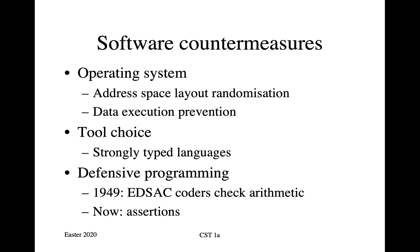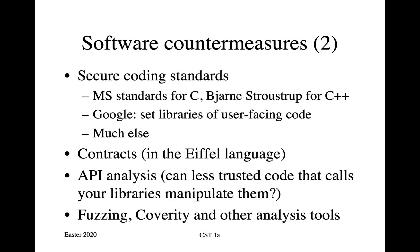Another way with some modern programming languages is by means of assertions. In addition to platform-level measures, there are secure coding standards. In the course book, there's a description of how Microsoft evolved its coding standards for C. And if you look at the guest lecture given by Bjarne Stroustrup at Churchill College three years ago — available on video — he describes the standards and guidelines he's produced for C++ to make it much more robust. If you've ever interned at a company like Google, you'll have experienced that there are set libraries of user-facing code — you're not allowed to write your own input routines or your own JavaScript for websites. Specialist teams do that, and you have to use the interfaces they provide.